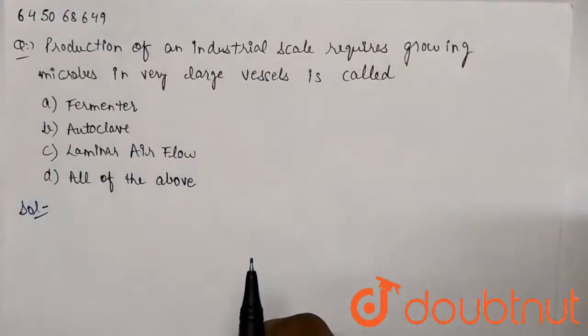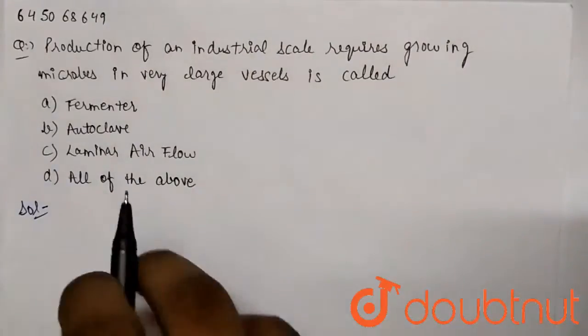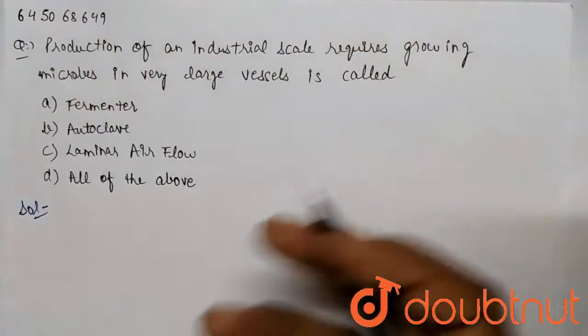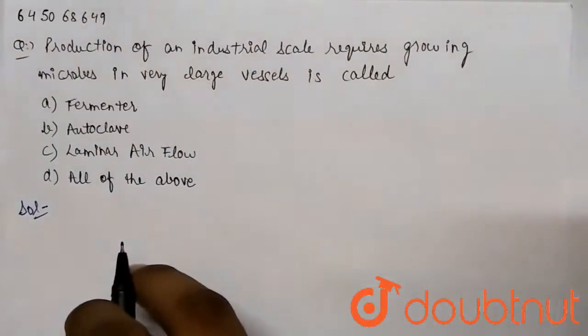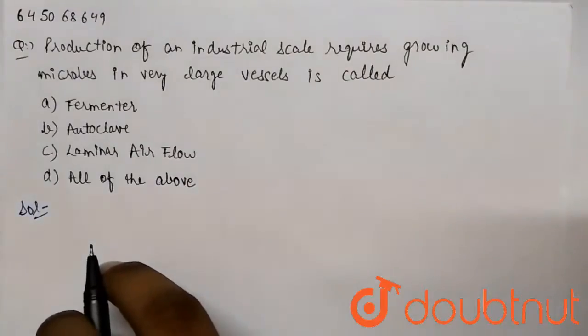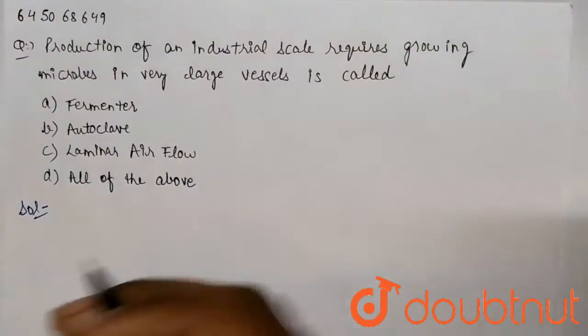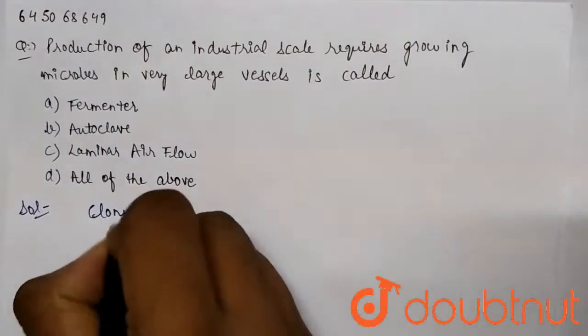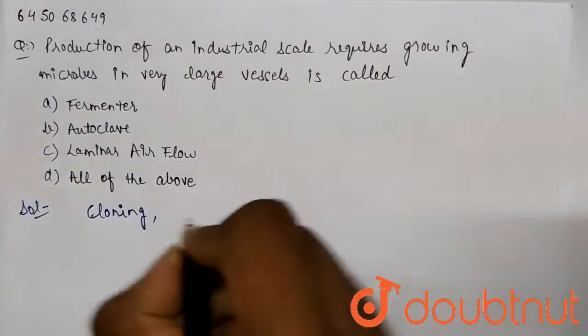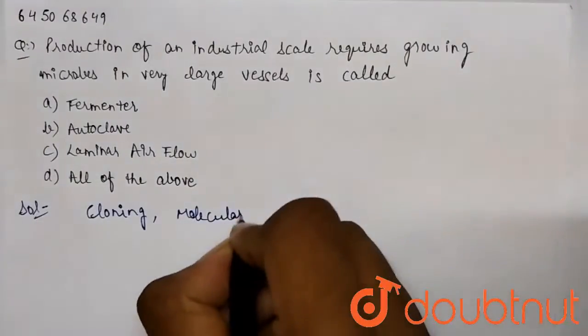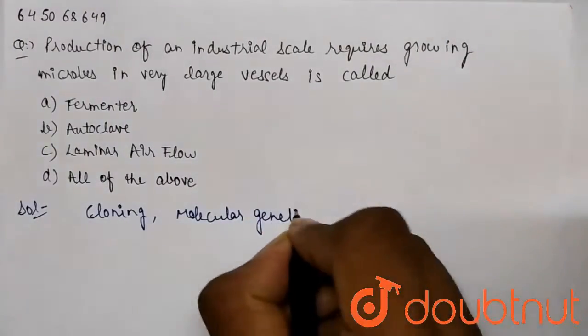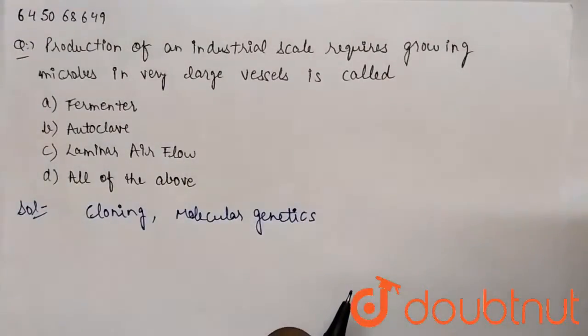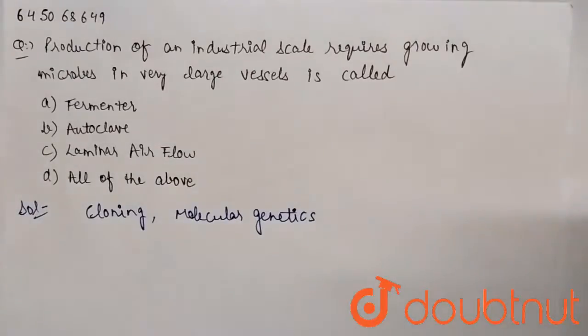Now, microbes are very important to our research life. Microbes are very important because microbes are easy to handle. We can easily clone a gene and understand the function of a gene. We can easily use them for cloning purposes and for molecular genetics. The microbes act as a good tool.